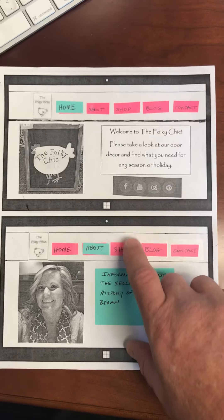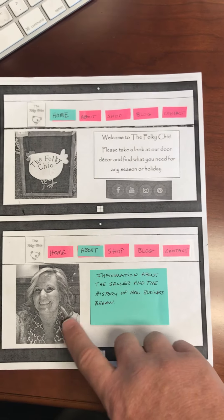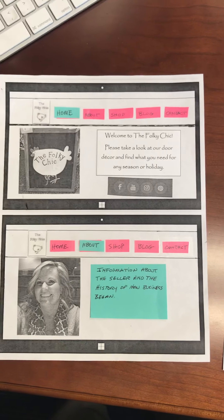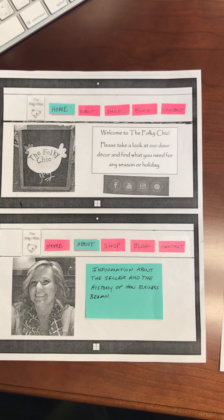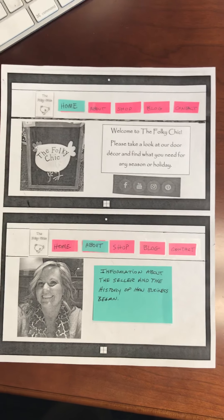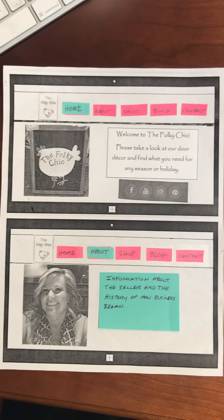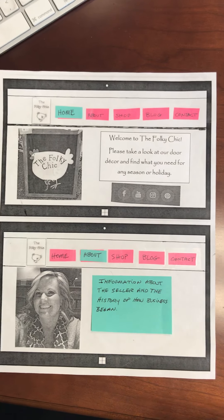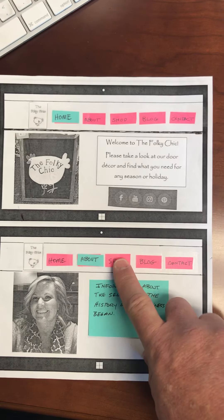Moving through the website, we would click on the About tab where you would see a photo of the seller along with information about the seller, how the business began, and some basic background about why this business exists. This is a business site, so you'll see different navigation links across the top, one of them being the shop.